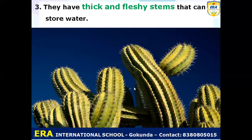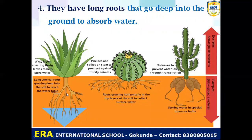The third feature is that desert plants have a thick and fleshy stem, which is useful for storing water. The fourth feature is that since deserts have less water, desert plants have long roots. These long roots go deep into the ground to absorb water. So these are the four features of desert plants.